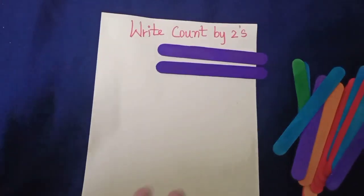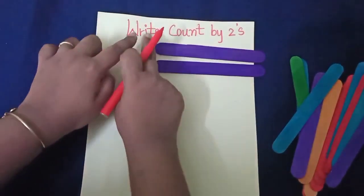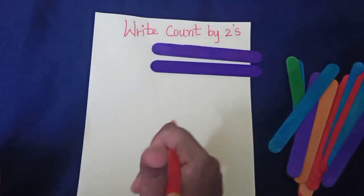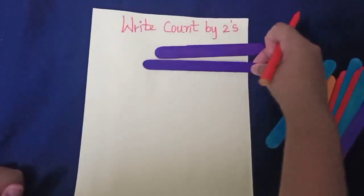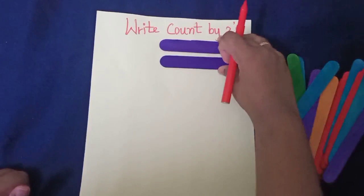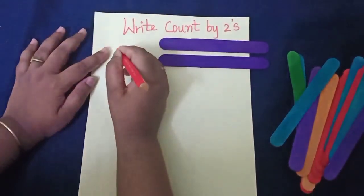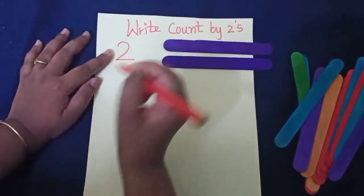Okay children, now we are going to see how to write count by 2's. See how many sticks ma'am is having — 1, 2. So ma'am is having 2 sticks. We have to put 2 here.